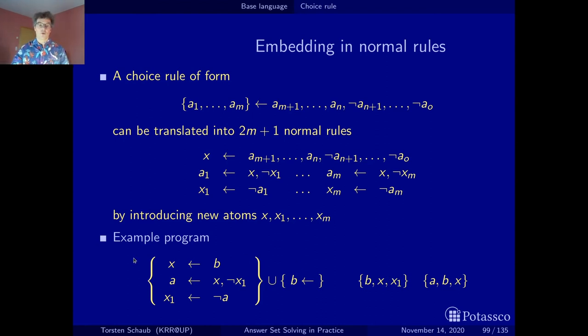Now that we have a normal logic program, the two stable models are not contained in each other. Here we have x1 and here we don't. Here we have A and here we don't. So these two stable models have an overlap, but neither is a subset of the other one. We're back to this property of normal logic programs.